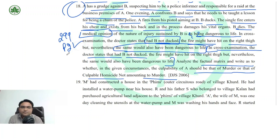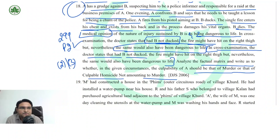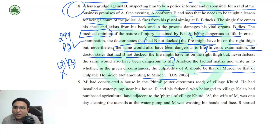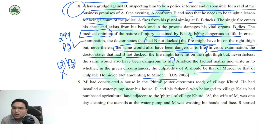When Part 2 applies, we move to Section 300 — either Clause 2 or Clause 3. Clause 2 requires special knowledge about the victim — that is not present here, so rule it out. Clause 3 requires the injury to be 'sufficient in the ordinary course of nature to cause death' — but the doctor said it was only 'dangerous to life,' not 'sufficient in all cases to cause death.' Therefore, Clause 3 does not apply, Section 300 is not proved, and A will be liable for culpable homicide not amounting to murder.